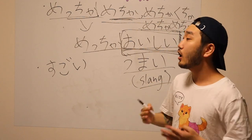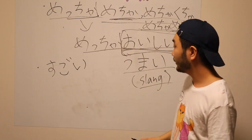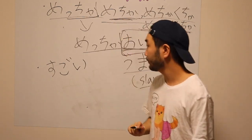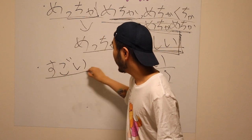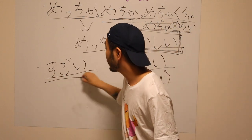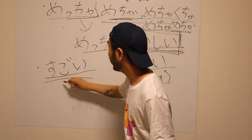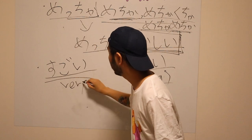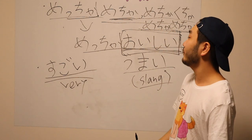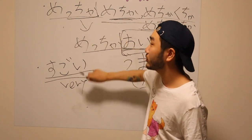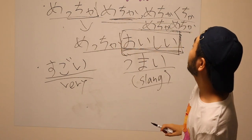They use it like amazing, awesome, wow. Sugoi! Sugoi! And you can use this one as very as well. There's so many ways to say very in Japanese. And these are just some stuff of them.